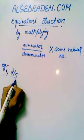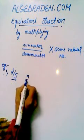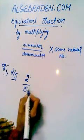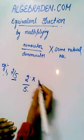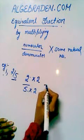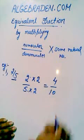we have 2 over 5. To find its equivalent fraction, we need to multiply both numerator and denominator with the same natural number. We multiply both with 2 and it gives us 4 upon 10.